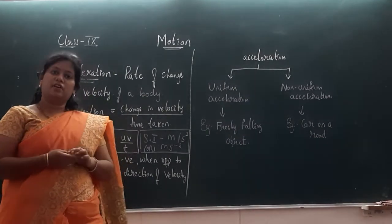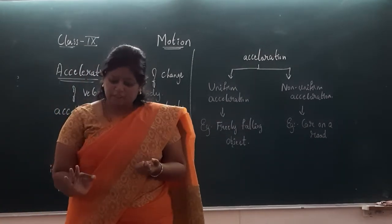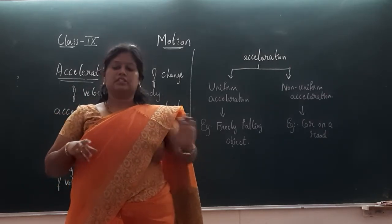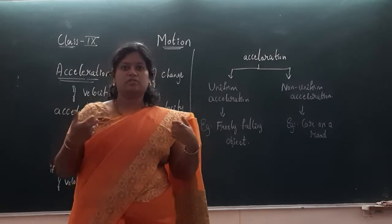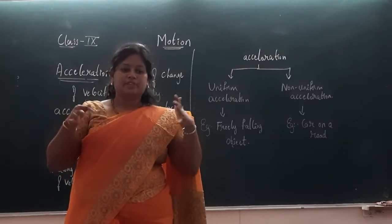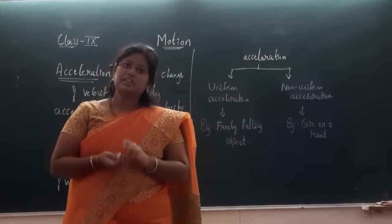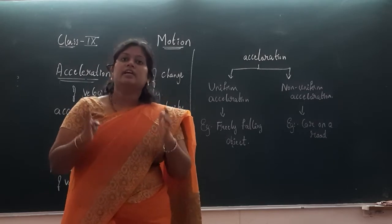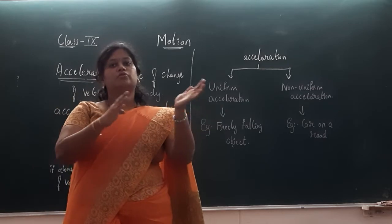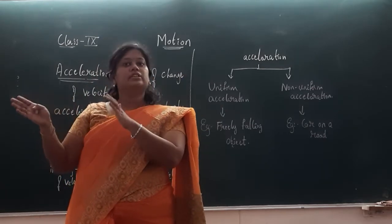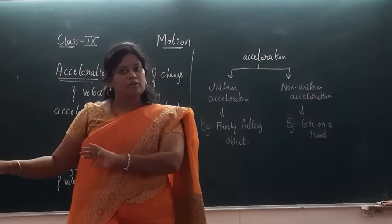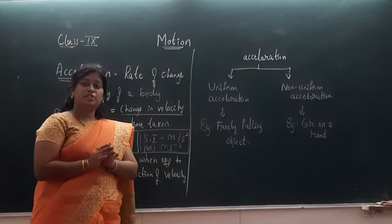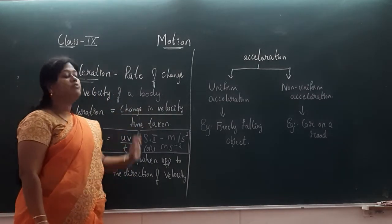We all know about the initial and the final velocity of the body. Initial velocity means with what speed the body is starting. As soon as you start a vehicle, you cannot start in fourth gear directly. You have to first start slowly and then keep increasing the speed. So with what speed you are starting to move is the initial velocity. And the velocity you travel next is the final velocity.